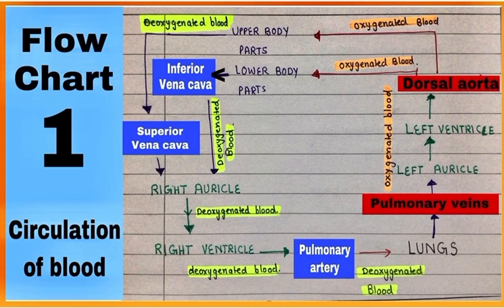Flowchart number one is showing circulation of blood in humans, where the heart is four-chambered: right and left atria, and right and left ventricles. Remember, the right side of the heart has deoxygenated blood, while the left side of the heart has oxygenated blood.